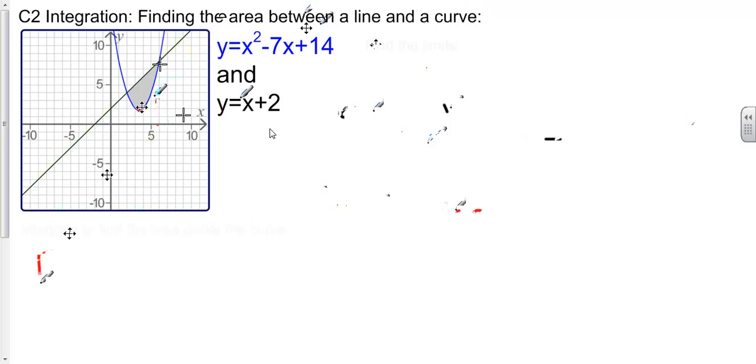Therefore to work out our area of our shaded bit, our final answer is the whole area of the trapezium, take away the area of the bit underneath the curve, and that gives us an answer of 10 and 2 thirds. That's definite integration between two limits where the area is enclosed between a line and a curve.